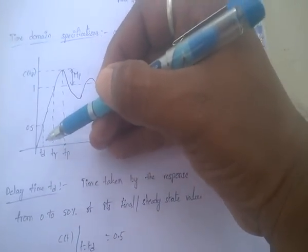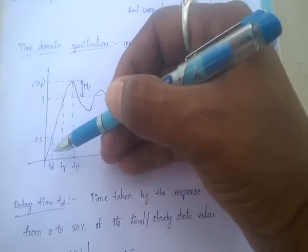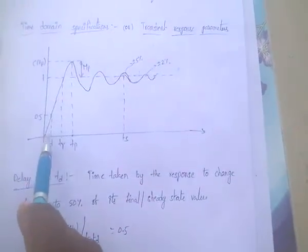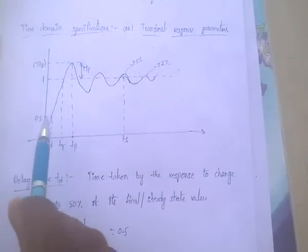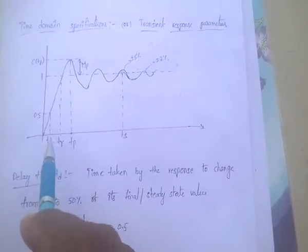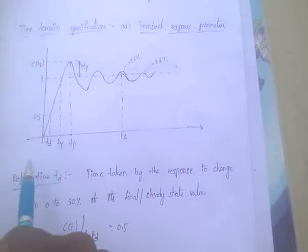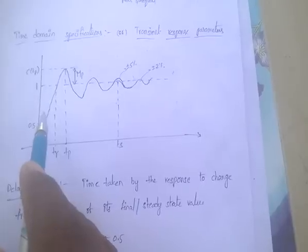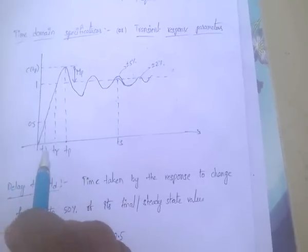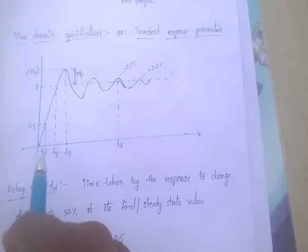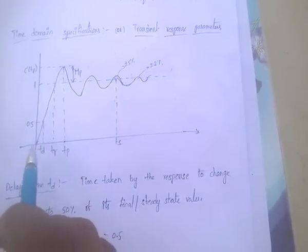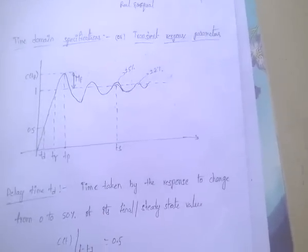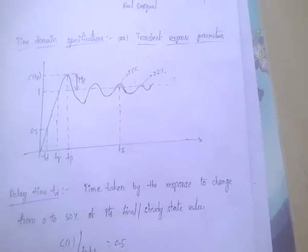TD means delay time — the time taken by the response to change from 0 to 50% of the final value. This is called delay time.